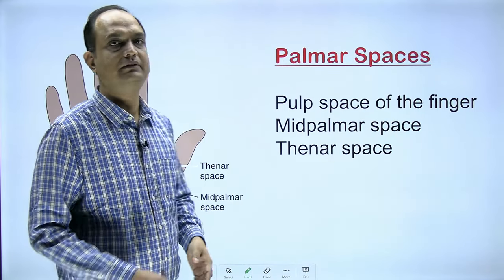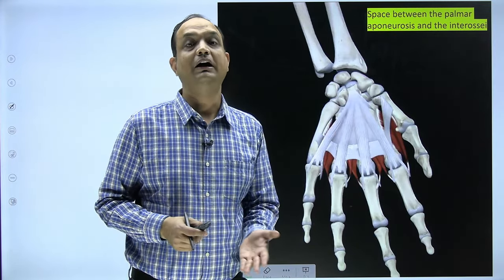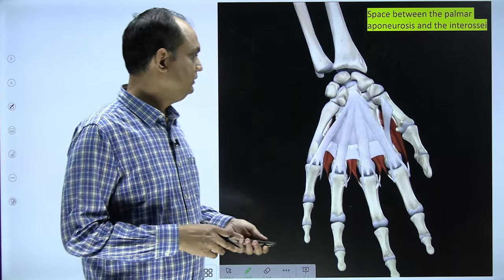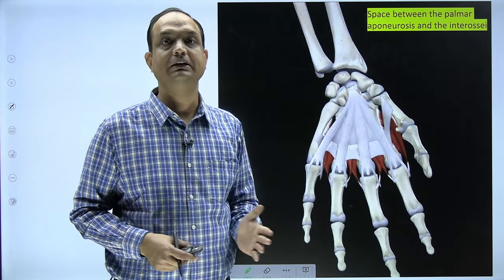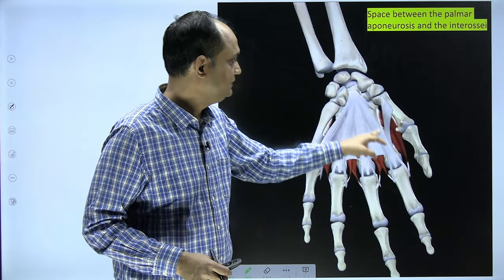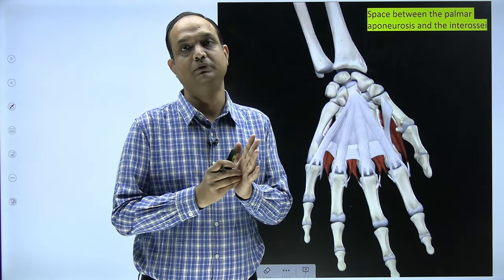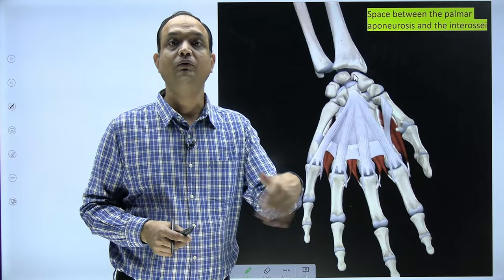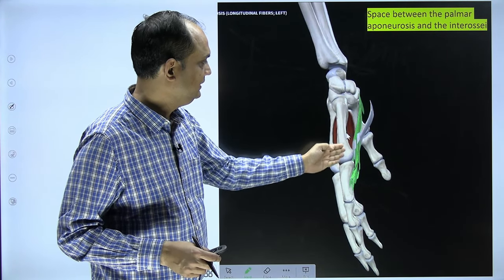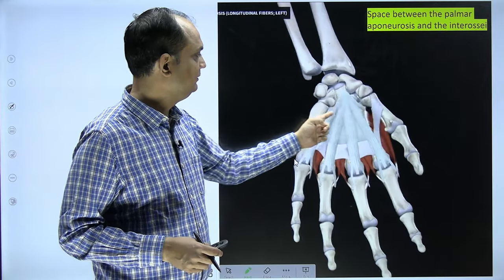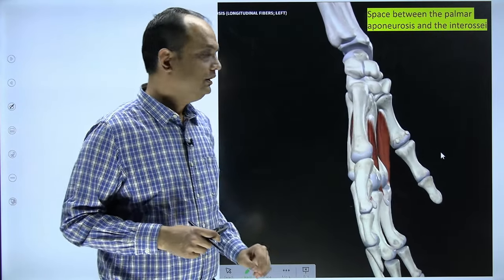First you have to understand what is the meaning of the 'space.' You can see this thick aponeurosis known as the palmar aponeurosis. During dissection, once you remove the skin of your palm, you will find this thick triangular band. Here I have removed all structures present in the palm, so the space is now visible. Posteriorly we have the metacarpals, and between the metacarpals you have the interosseous muscles.